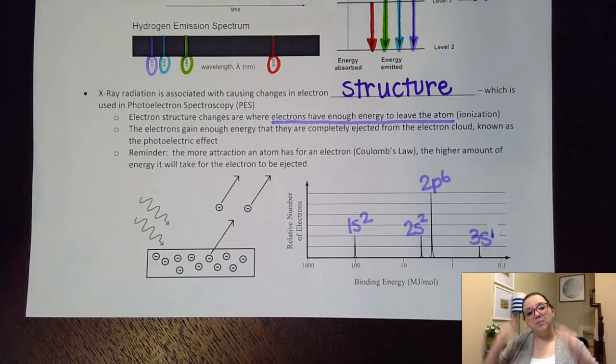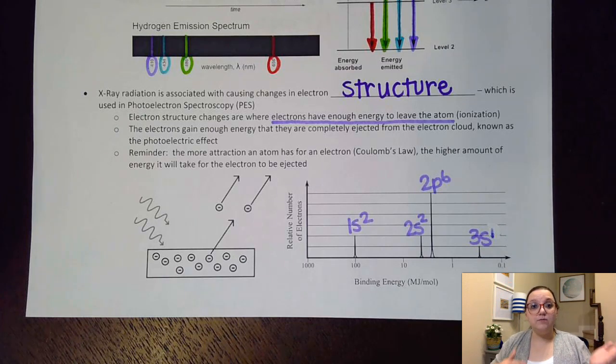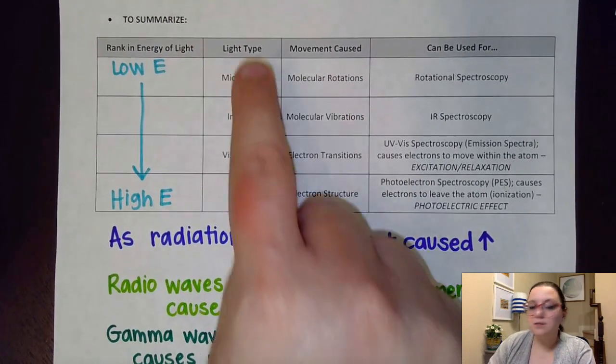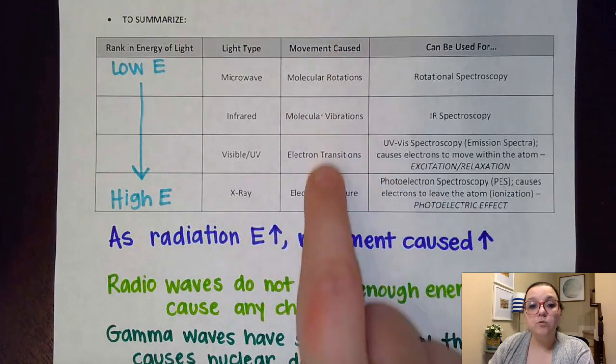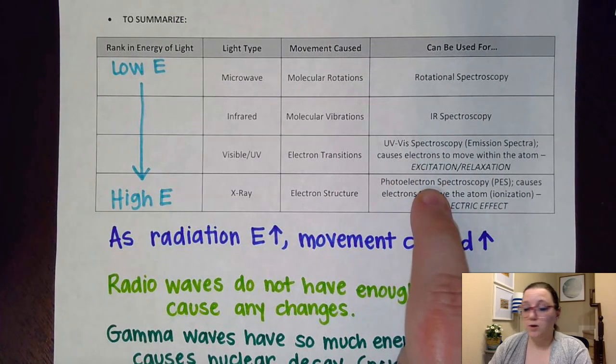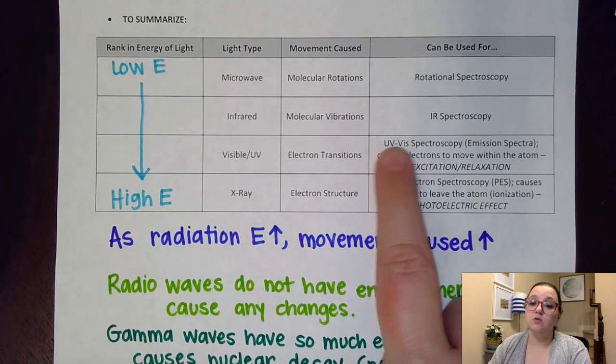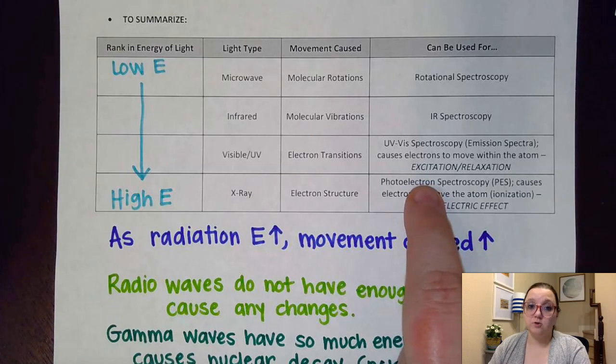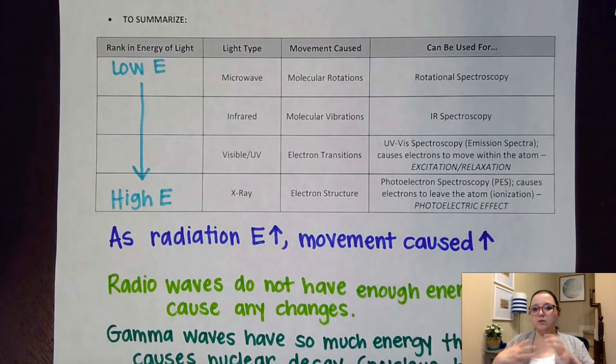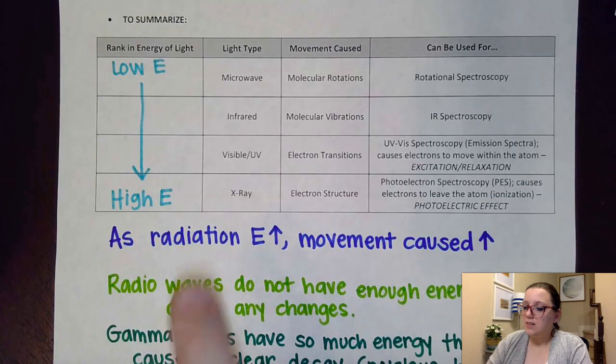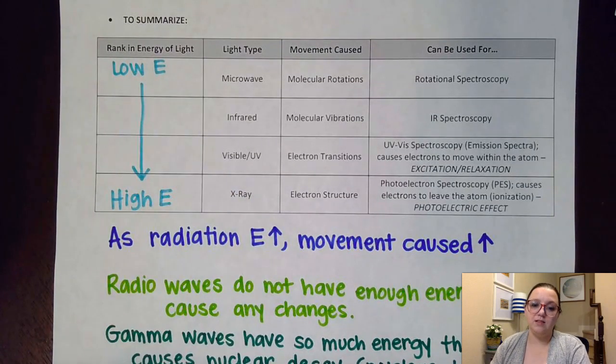All right, let's go ahead and now kind of compare our four types of spectroscopy with our different types of energies and light. So on the next page, we have a nice lovely chart that lists all of our light types out, what movement they caused, and also reminded us a little bit about what kind of spectroscopy we would use them for. The main ones you would want to be concerned with is the UVVIS spectroscopy. Again, we're going to talk more about that next class, as well as our PES, our photoelectron spectroscopy. However, what I want to call your attention to is the fact that each time that our movement increased, the energy associated with that light increased.